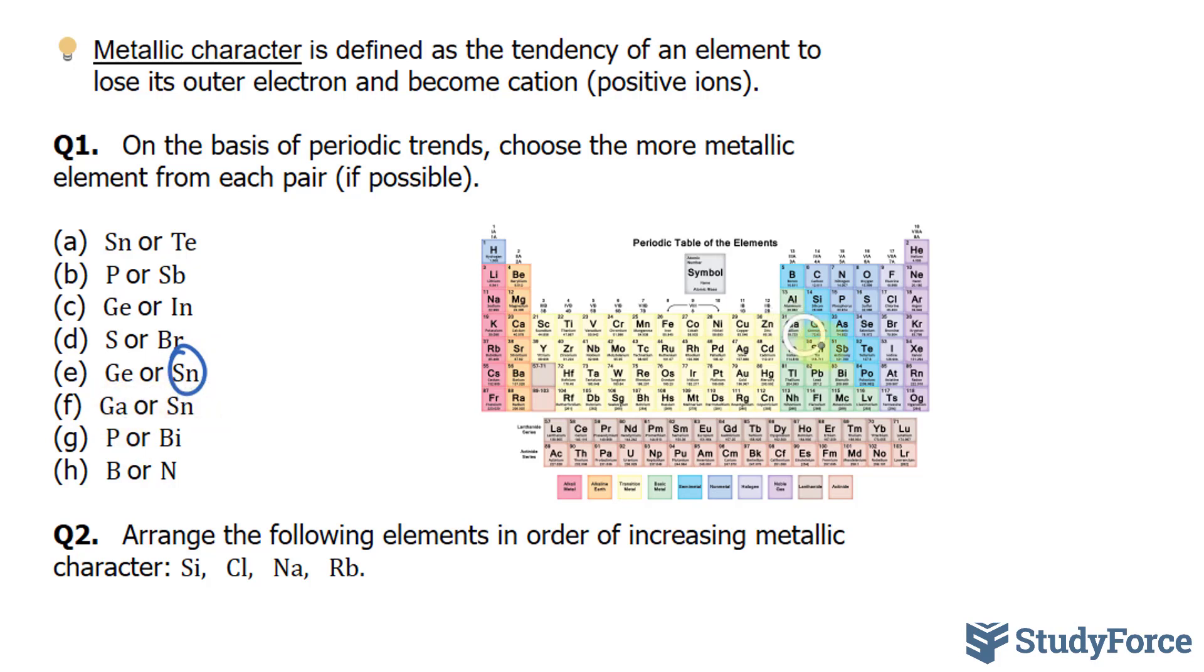Gallium versus tin. Gallium is right here, tin is right there. We have an effect where it moves to the right and down a column. Therefore, we don't know. This is ambiguous.